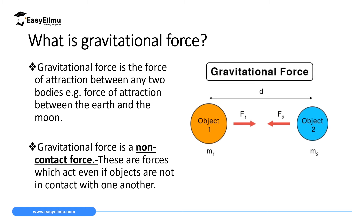What is gravitational force? Gravitational force is a force of attraction between two bodies which are at a distance. That is very important to note. This force of attraction is between two bodies, and these two bodies must be at a distance — meaning the bodies should not touch each other. A good example is the force between planet Earth and the Moon.